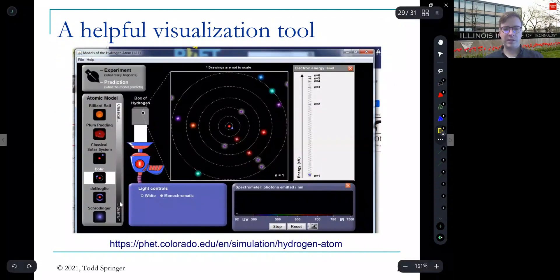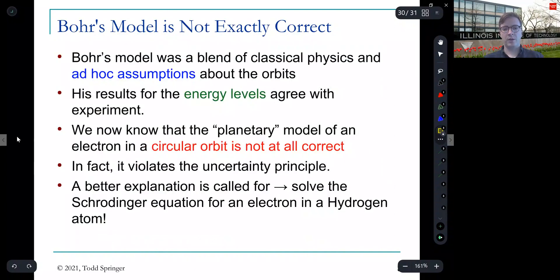So this formula here, along with the idea that when I make a transition from one energy level to another, giving off a photon, leads to exactly the right wavelengths to solve the puzzle of why only those four wavelengths are emitted for hydrogen. There's a really great visualization tool here. You can Google PhET, P-H-E-T, and then hydrogen atom. And this sort of helps you to visualize what's going on in Bohr's model.